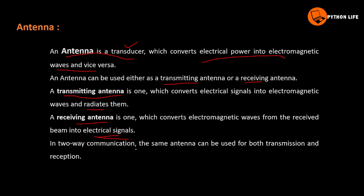In two-way communication, the same antenna can be used for both transmission and reception. So this is the same antenna as a transmitter and receiver — a transmitting and receiving antenna.